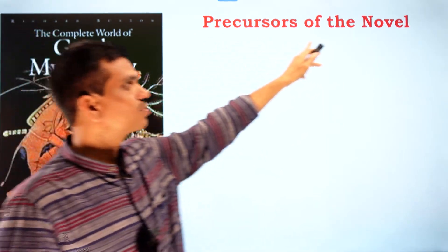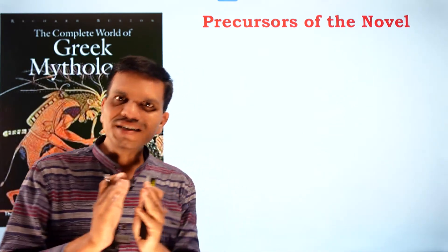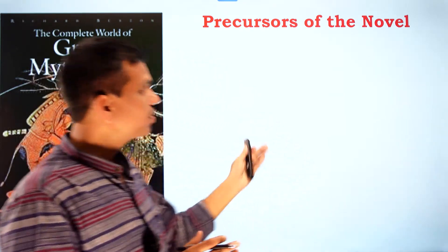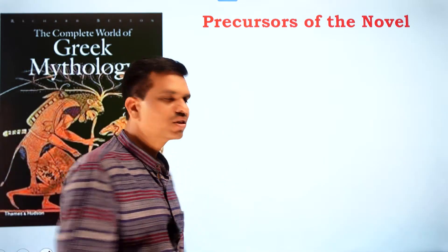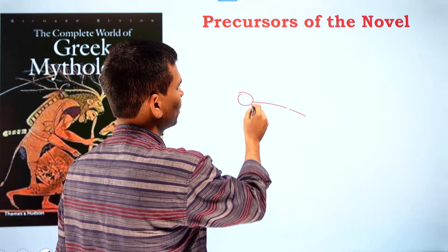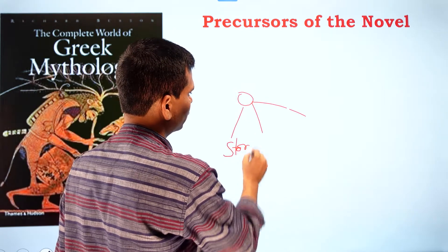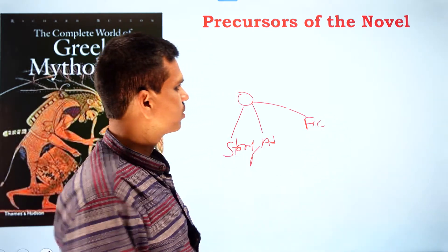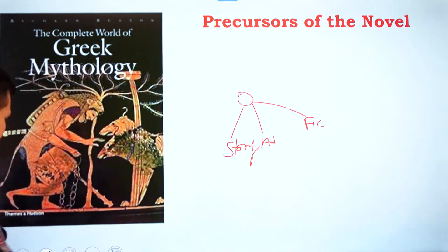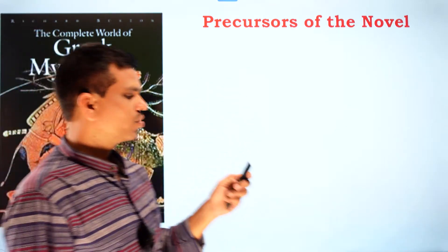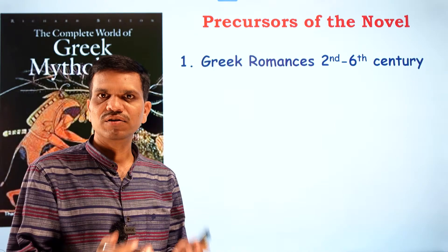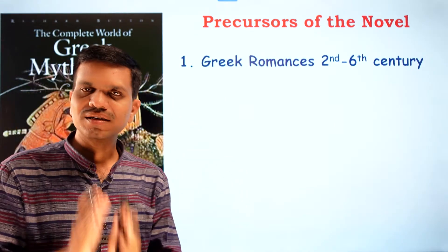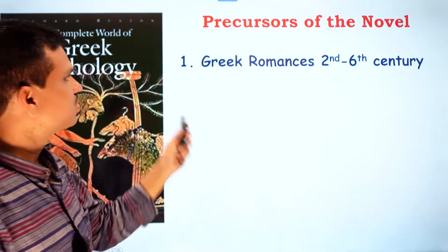Next, let's understand the precursors of the novel — the predecessors. It is very difficult to understand the genre from its beginning because there is no fixed point from where you can say the novel started. It developed through different genres like story, adventures, fiction, and novel. However, we can identify three major things in the development of the novel.